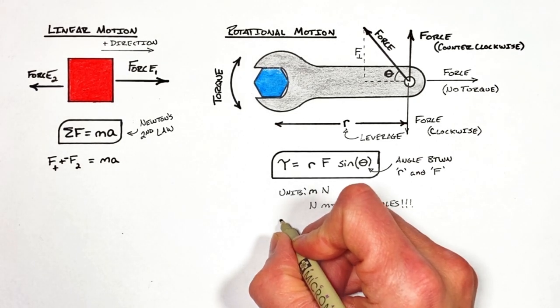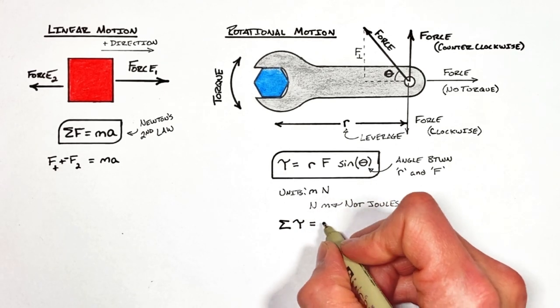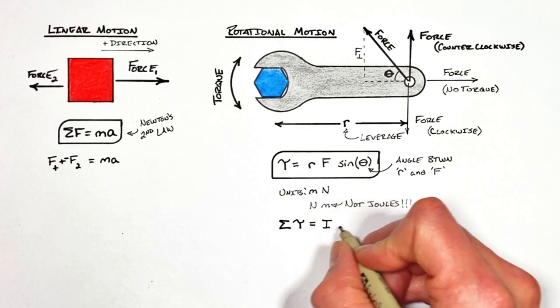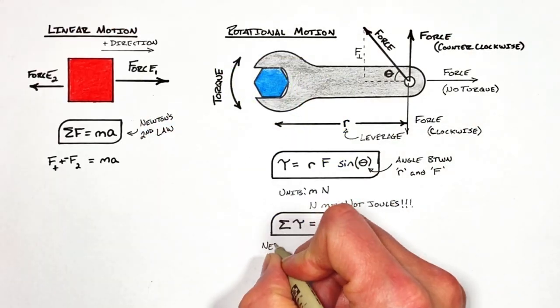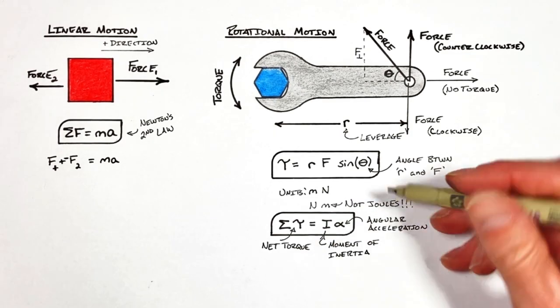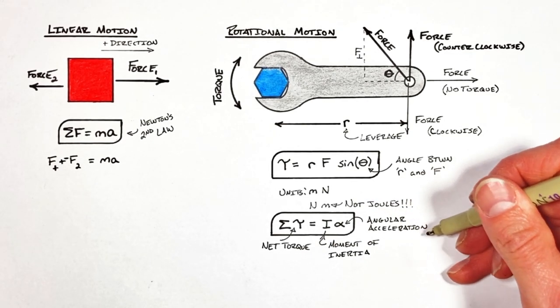You see when applied in a circle Newton's second law says that the sum of all torques is equal to something called the rotational moment of inertia times the angular acceleration of the object. And we'll talk more later on about the moment of inertia as well as the angular acceleration of an object.